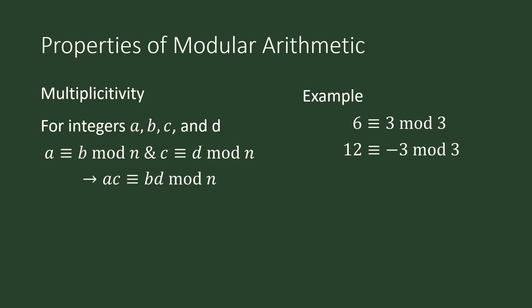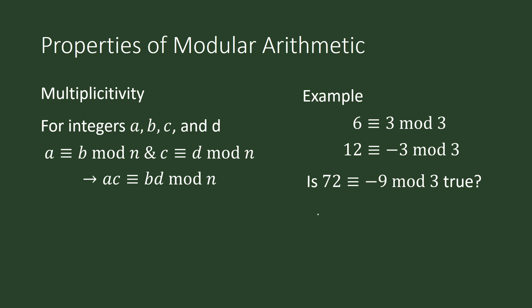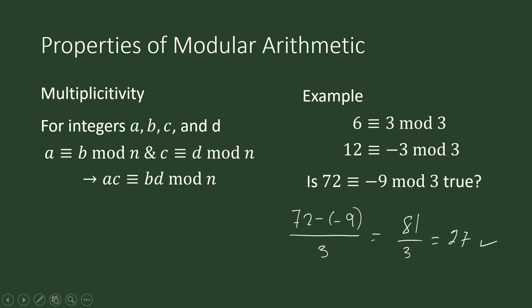6 times 12 is 72, and 3 times negative 3 is negative 9. Is 72 congruent to negative 9 mod 3? Using our definition: 72 minus negative 9 divided by 3 equals 81 divided by 3, which equals 27. That is an integer, so yes — 72 is congruent to negative 9 mod 3.